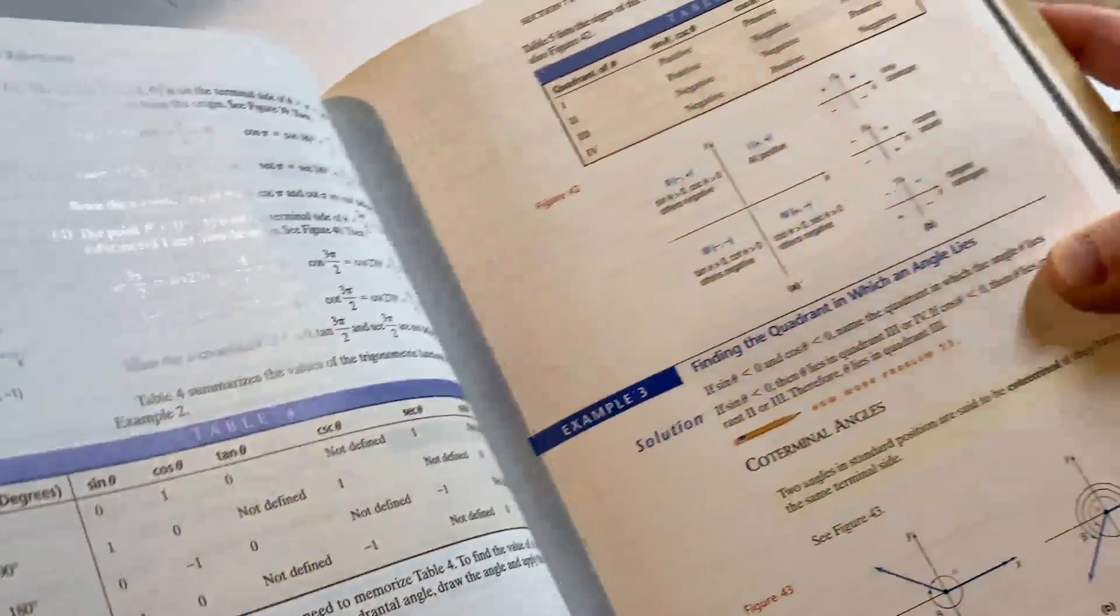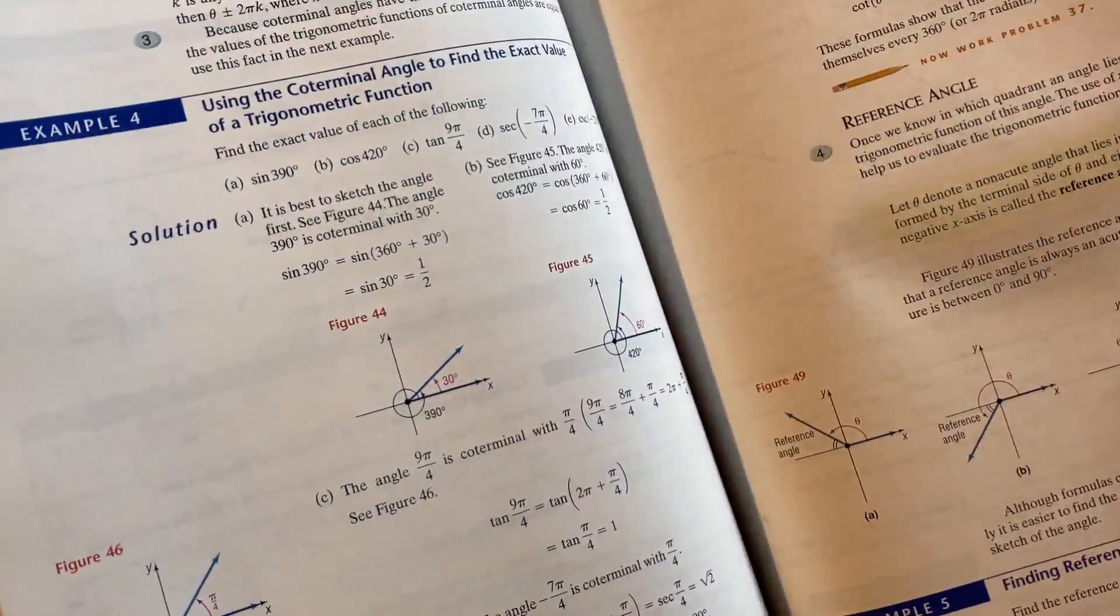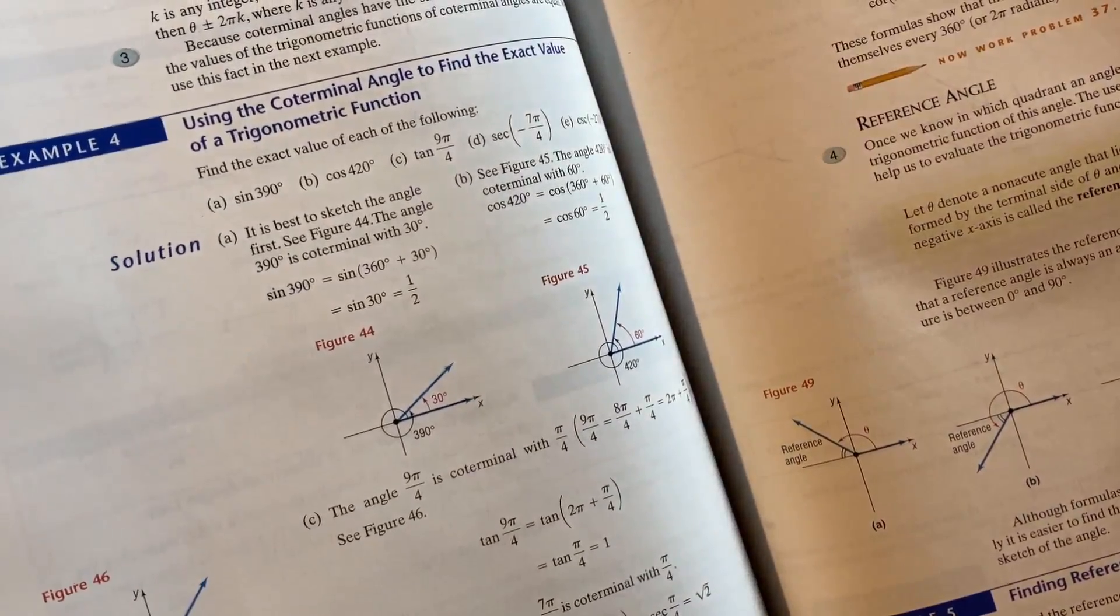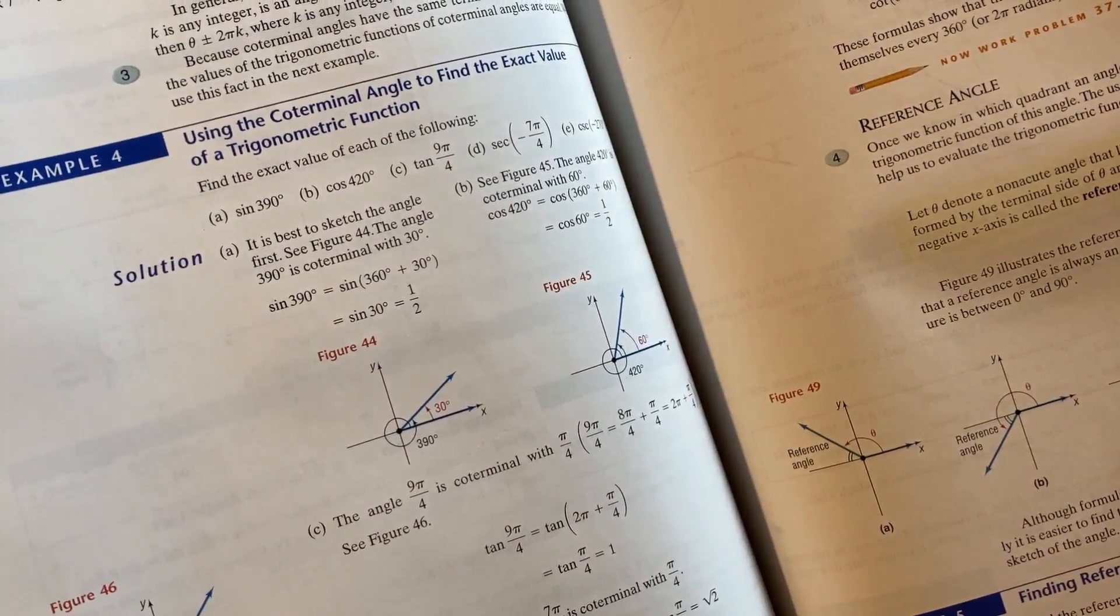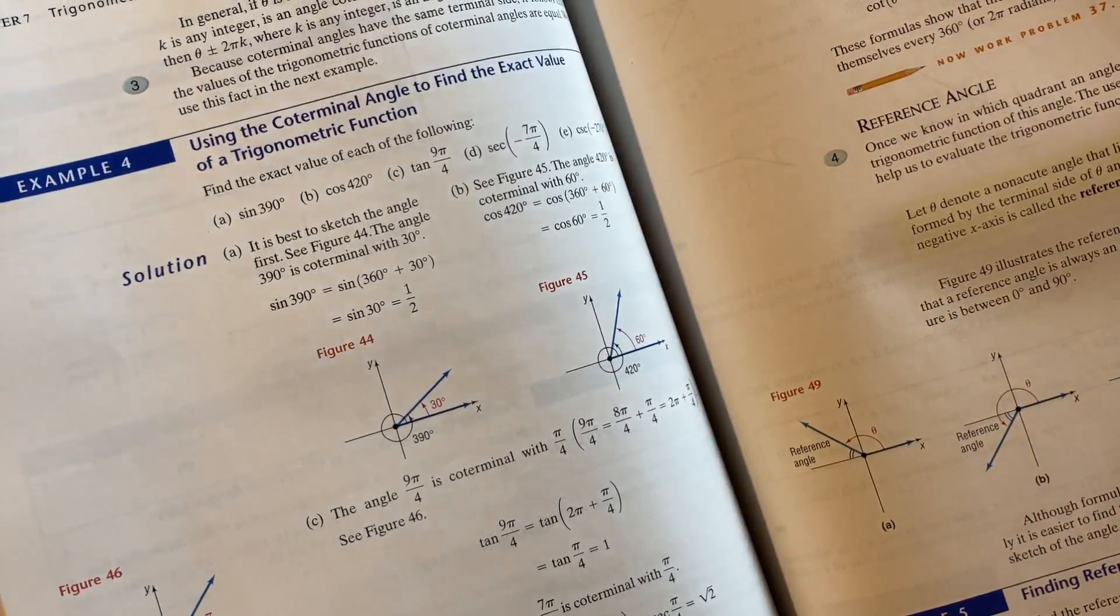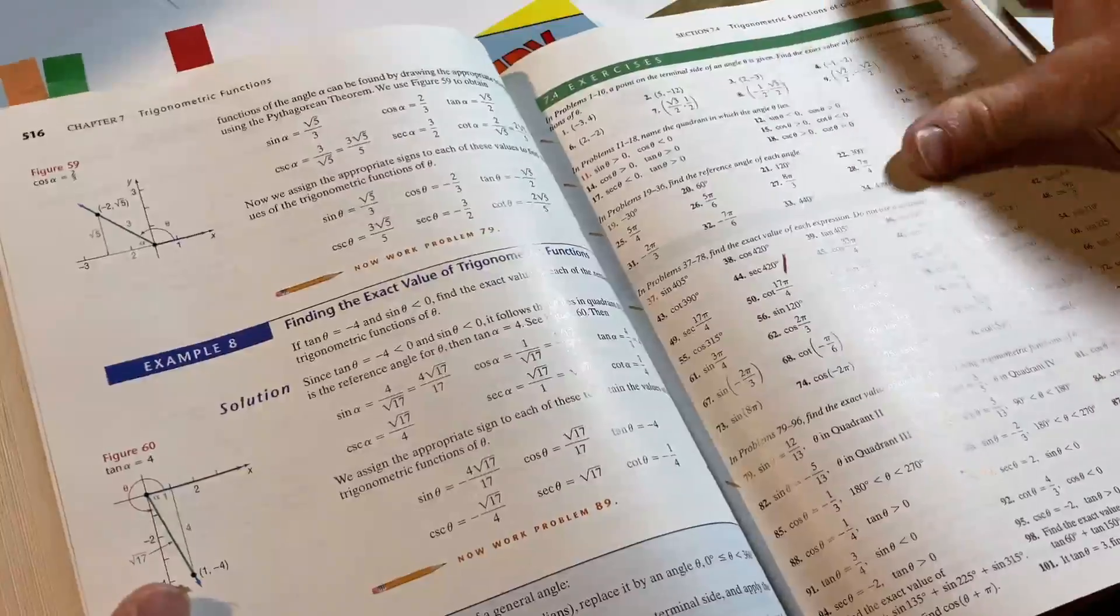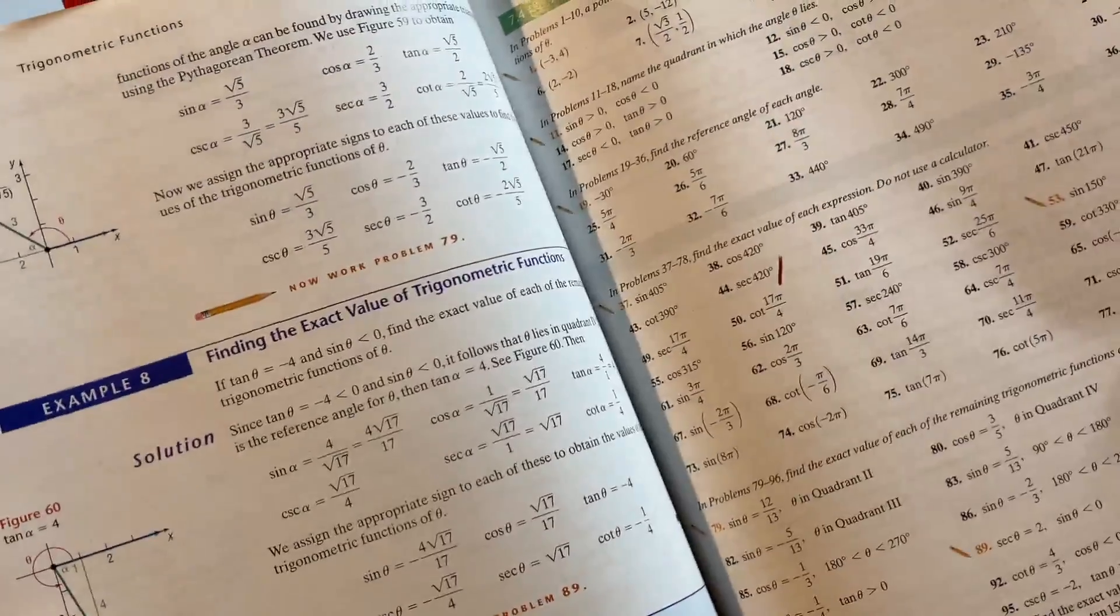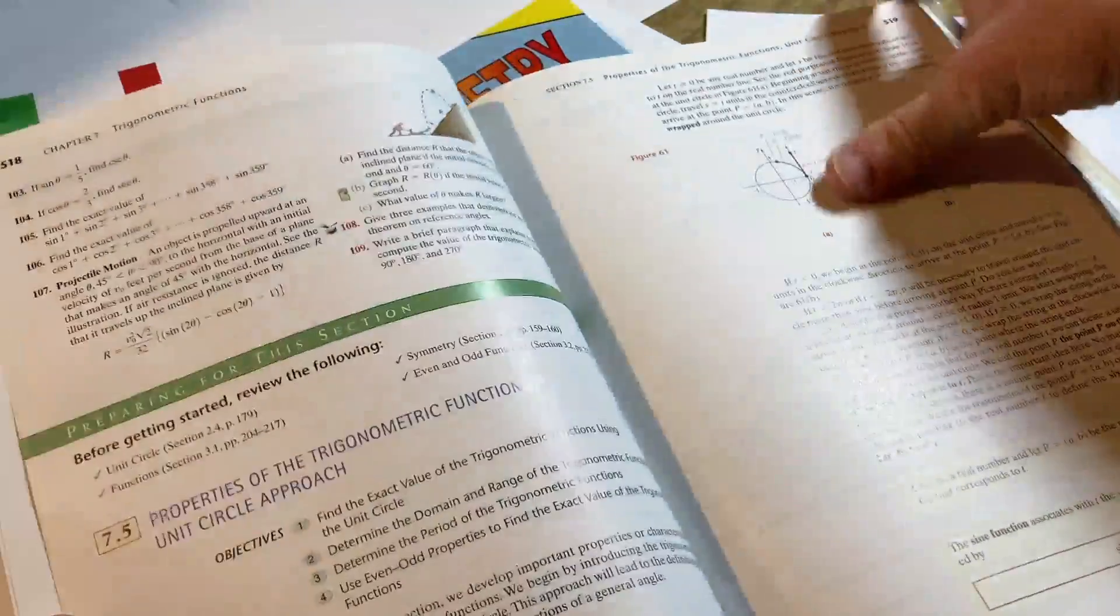So the format's a little bit different. It's got different tables, different colors. But you see he has solutions. Find the exact value of each of the following, like the sign of 390. Using some identities there. Then you have some exercises here. So another great book for learning trig.